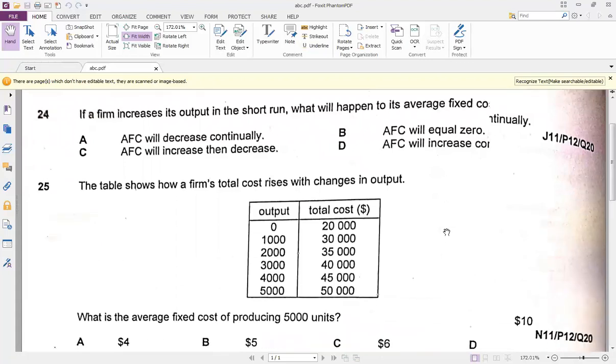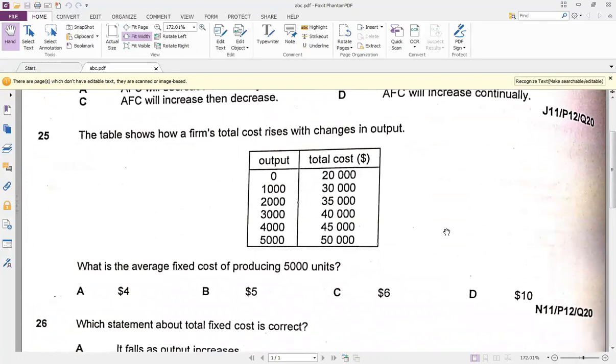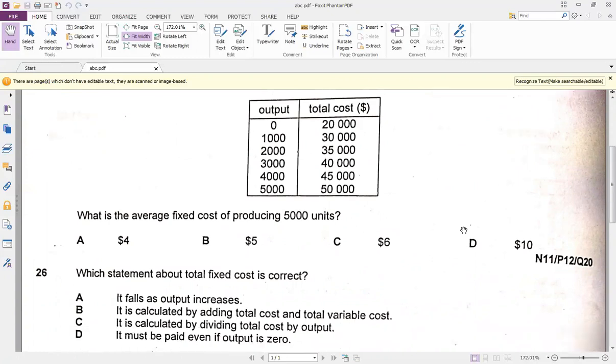Moving on to question 25, the question shows a table where the firm total cost rises with the change in output. There are two columns: output and total cost. We have average fixed cost and variable cost in this, right? But the question is: what is the average fixed cost of producing 5,000 units? Do we see average fixed cost in the table? No we don't. But here is the hint.